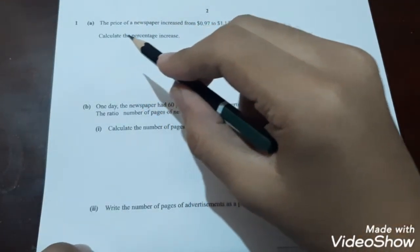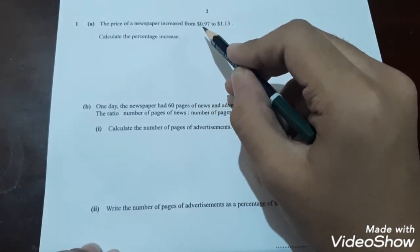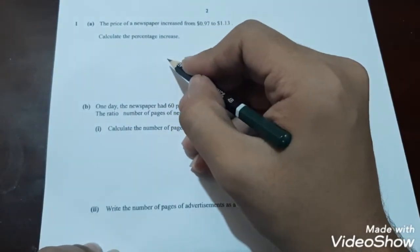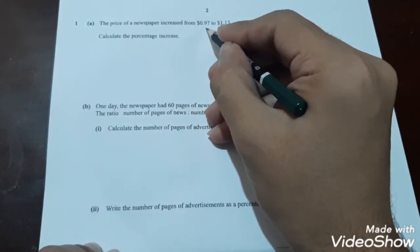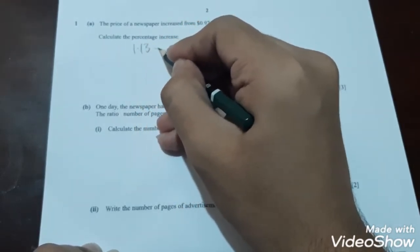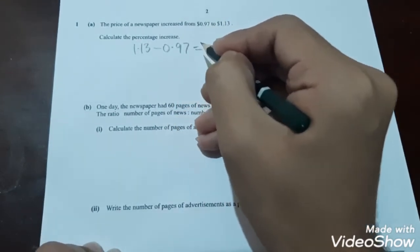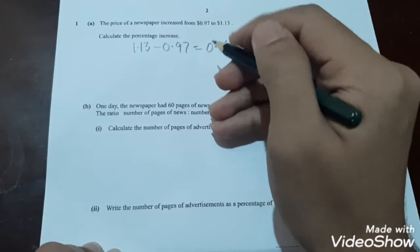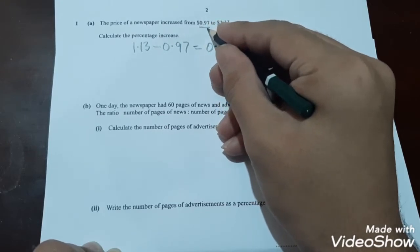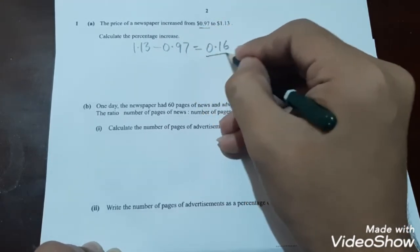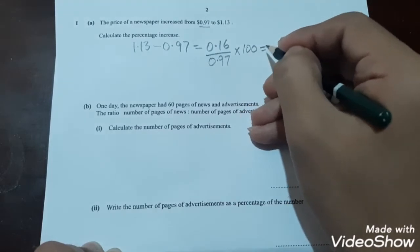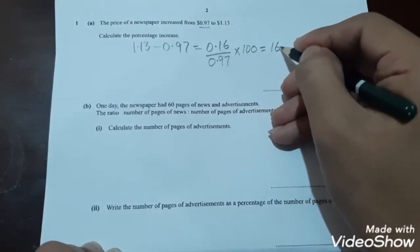Question 1 part A states: the price of a newspaper increased from $0.97 to $1.13. Calculate the percentage increase. So we have to calculate the percentage increase. First we will calculate the difference which is $1.13 minus $0.97, which will be $0.16. Then we will divide 0.16 by 0.97, which is the original value, and multiply by 100 to calculate the percentage increase, which will be 16.5%.